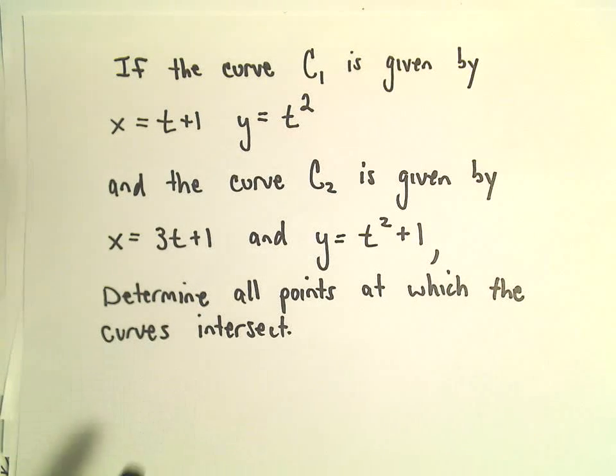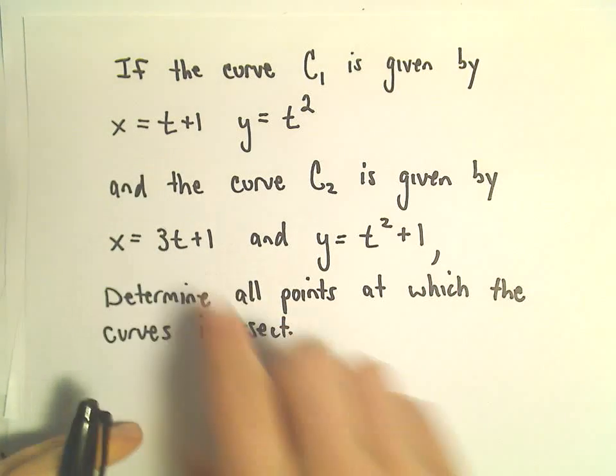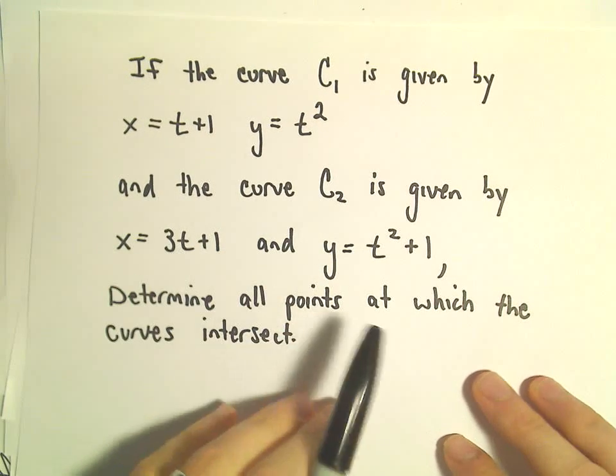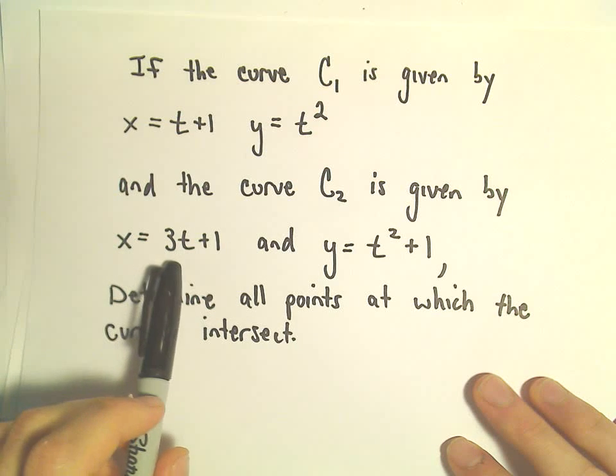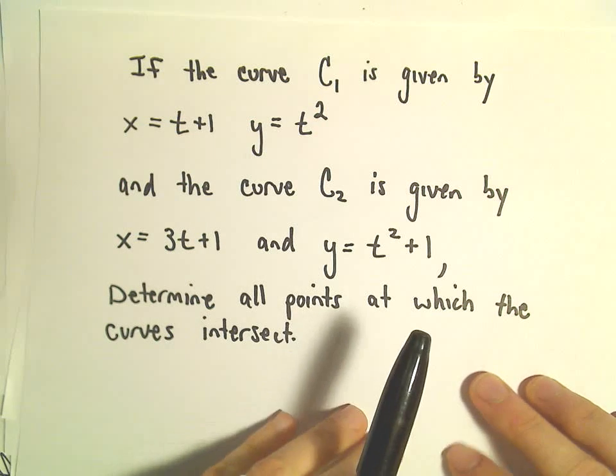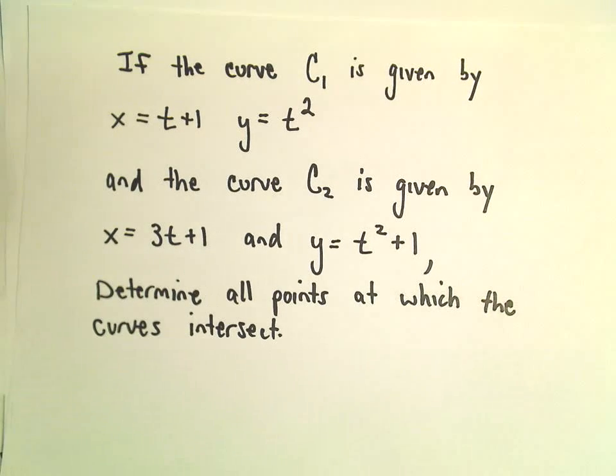So suppose our curve C1 is described by the parametric equations X equals T plus 1, Y equals T squared. C2, our second curve, is given by X equals 3T plus 1, and Y equals T squared plus 1. Again, we're going to find the points of intersection.